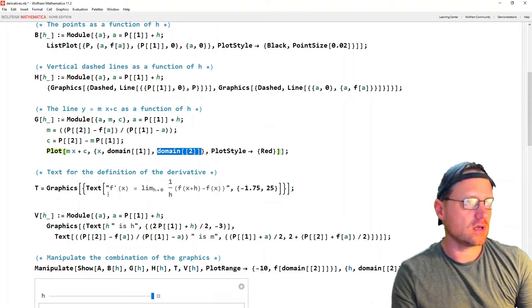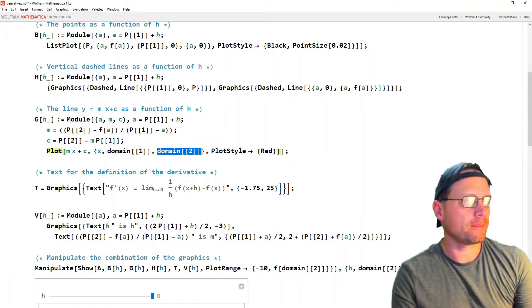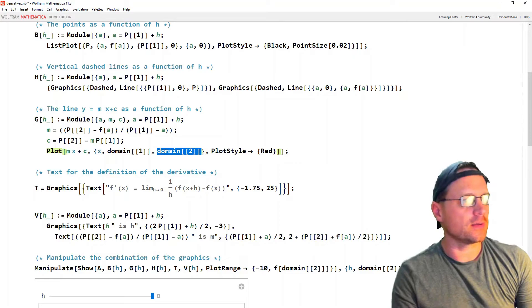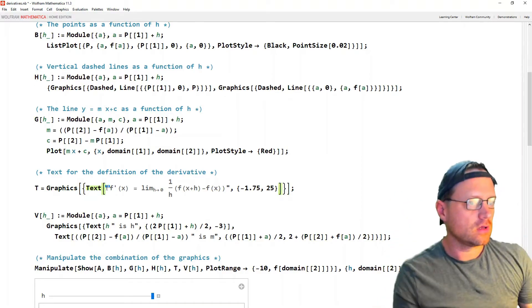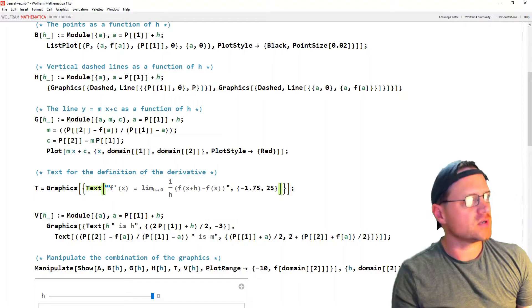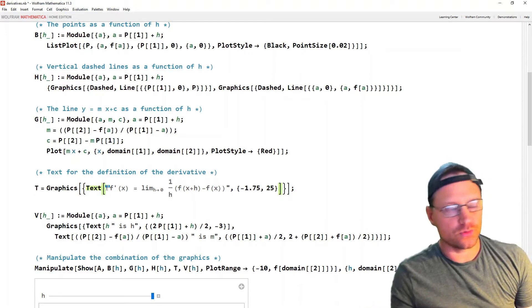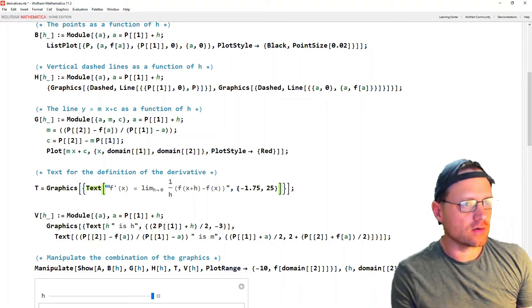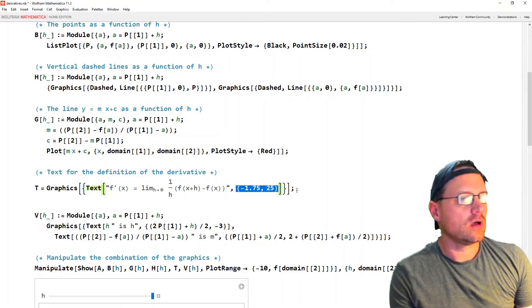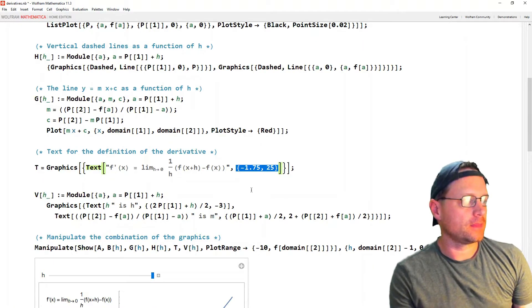Next, here is the code for putting the text in. It describes the definition of the limit, or definition of the derivative. So I'm using the text function there. And I've got the two inverted commas to say I want this to come out as a string rather than exact code. Then this here is the place where I want that to go on the graphic.